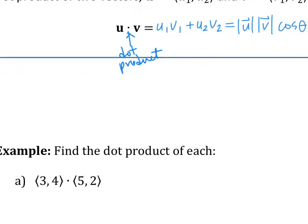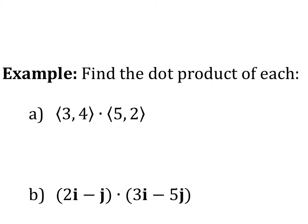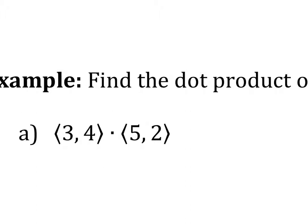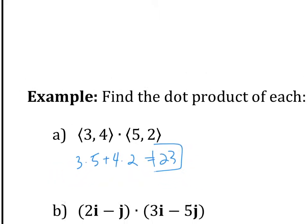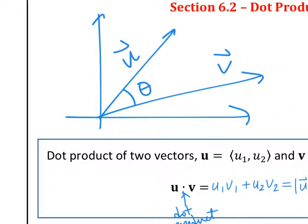Let's look at this first example: find the dot product. Take first component times first component plus second component times second component. Your answer is a scalar, not a vector. So if you end up with a vector, something is wrong. For this one: 3 times 5 plus 4 times 2, which is 23. Please ask yourself: am I getting a number or am I getting a vector?